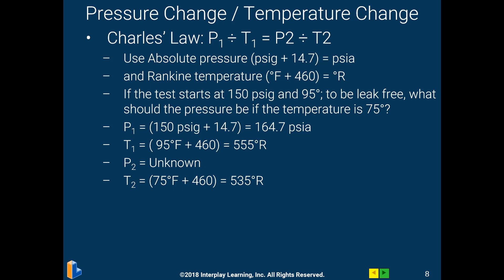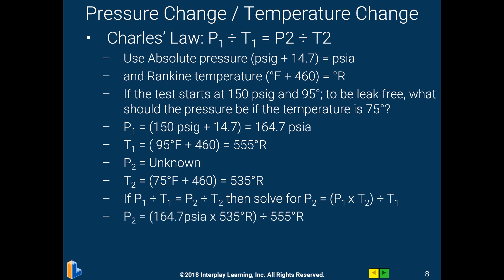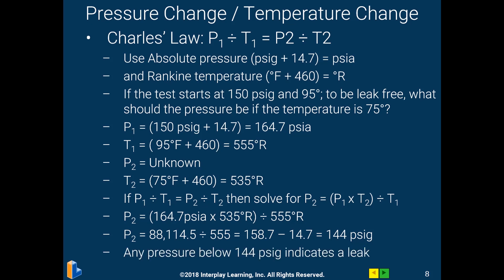We do know the temperature is 75 degrees in the morning, or converted to 535 degrees Rankine, and then we solve for P2, which is the pressure the next morning. Once you do the math, it comes out to 144 PSIG. This means we didn't lose an ounce of nitrogen in the system — the only reason the pressure went down was because the temperature went down. Any pressure below 144 PSIG would mean there's a leak.